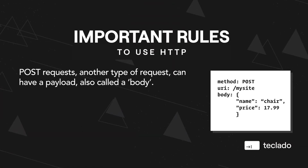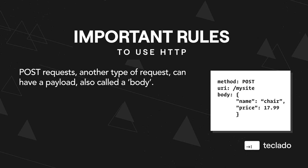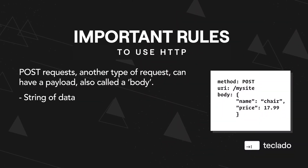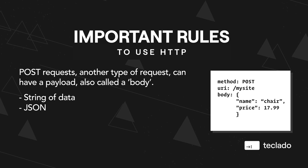This is important because if we want to use HTTP then there are rules we need to know about so that we can adhere to them. For example, POST requests — another type of request — can have a payload, also called a body. That is longer data included inside the request, which could be a string, JSON, a file, or form data. Some HTTP requests can have a payload and others can't. GET requests, for example, can't have a payload, but POST and PUT can.